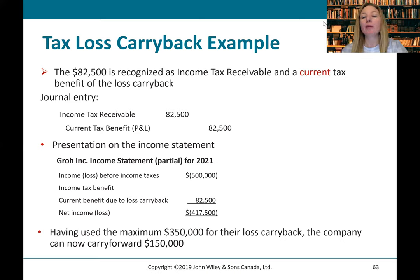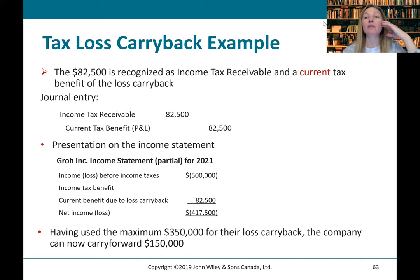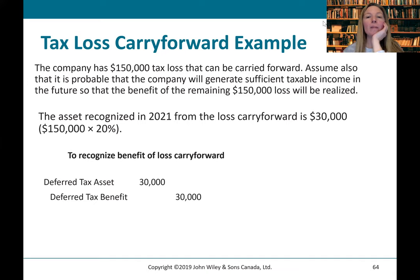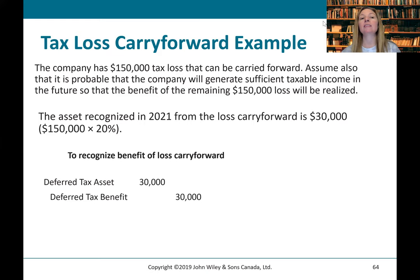We used the maximum $350,000 available from the immediately preceding three years, but we still have $150,000 left because we had $500,000 of unused tax losses. The immediately preceding three years gave us $350,000 of taxable income as the base. So we can carry forward $150,000 of tax losses. The company has $150,000 of tax losses that can be carried forward. Assuming it is probable that the company will generate sufficient taxable income in the future so that the benefit of the remaining $150,000 will be realized — meaning it's more likely than not — we want to recognize it. The asset we're going to recognize for the tax loss carry forward is the tax losses times the tax rate.